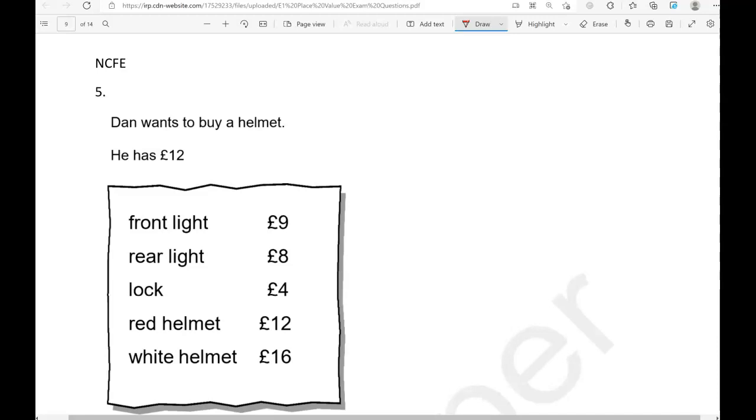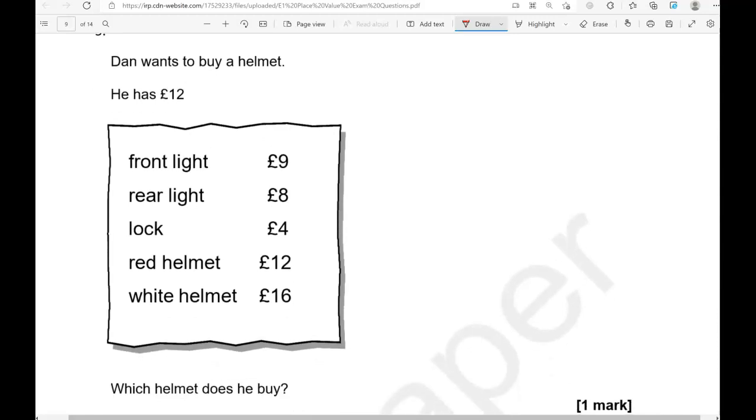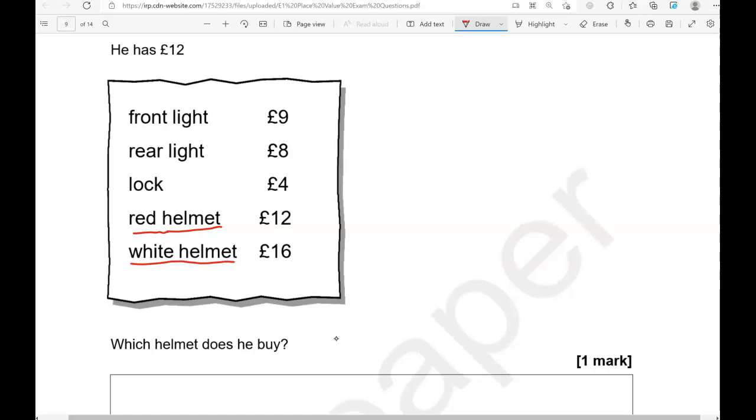Dan wants to buy a helmet. He has 12 pounds. We've got front light 9 pounds, rear light 8 pounds, lock 4 pounds, red helmet 12 pounds, white helmet 16 pounds. Which helmet does he buy? So we've got two helmets, red helmet and white helmet. He can't afford the white helmet because that is 16 pounds, that is above 12, it's greater than 12. So the only one he can buy is the red helmet which costs 12 pounds.